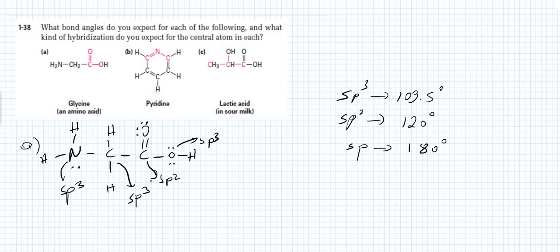This carbon is sp3 hybridized so its bond angles are expected to be around 109.5 degrees. Nitrogen is also sp3 hybridized so the bond angles around nitrogen are expected to be around 109.5 degrees. Keep in mind that these values are not absolute — if you have lone pair electrons or different types of bonds, such as an oxygen-hydrogen bond versus an oxygen-carbon bond, the bond angle might deviate by a couple of degrees, sometimes less and sometimes more.